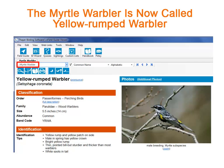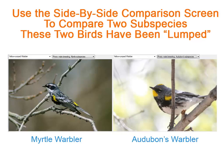Go ahead and click on any of the names. If you think you saw a Myrtle Warbler today, you will soon discover that it is currently called Yellow Rumped Warbler. Two different birds known as Myrtle Warbler and Audubon's Warbler have been lumped together and are now called Yellow Rumped Warbler.